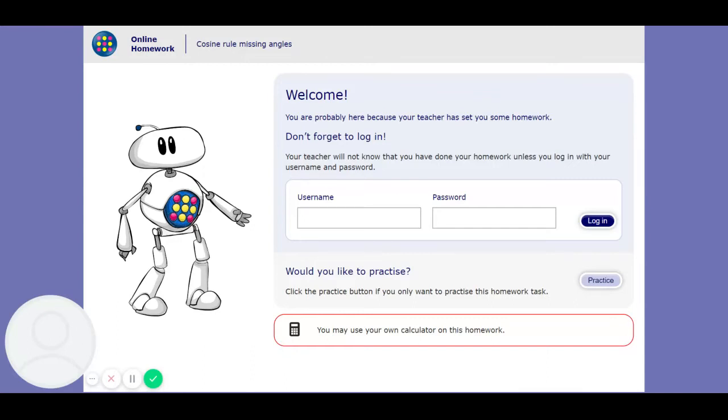Hi, so this is an explanation video for the cosine rule missing angles homework which you were set last week.